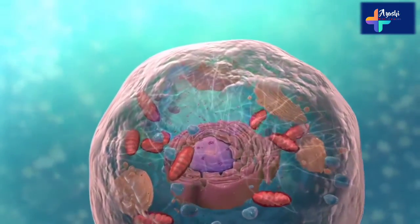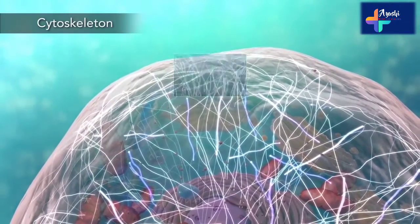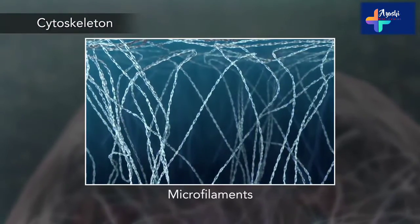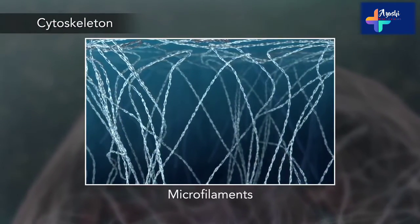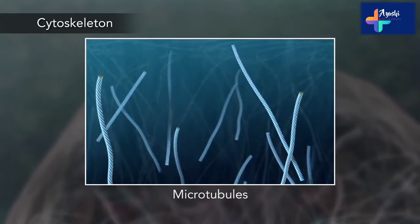Meanwhile, the cell maintains its shape through a cytoskeleton. The cytoskeleton includes the thread-like microfilaments, which are made of protein, and microtubules, which are thin, hollow tubes.